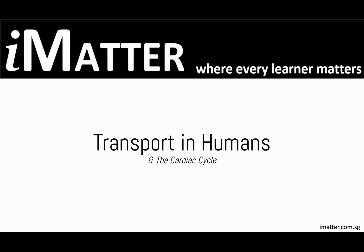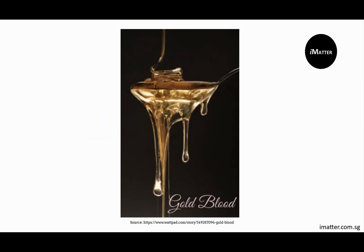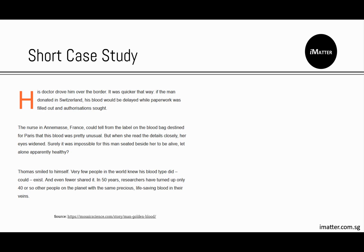First, we will be getting our brains running with a short case study. I was wondering if you guys have heard of golden blood — not this kind of golden blood, but the rare genetic condition known as golden blood. Here is a short article about a man with this rare genetic condition. Pause the video for a quick read up. Generally, it is a story about how this guy had to donate his blood and it was needed pretty badly.